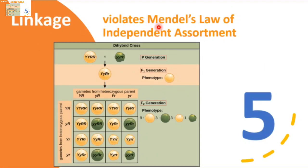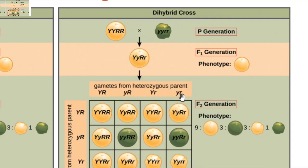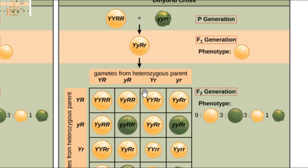And fifth, linkage violates Mendel's law of independent assortment. Recall that when genes follow independent assortment, their alleles sort into gametes independently of one another. In other words, the allele a gamete receives for one gene does not influence the allele received for another gene. Because what happens when there is linkage, especially when it is complete and closed, is that either both dominant alleles and both recessive alleles will be inherited together, or the dominant and recessive alleles will be inherited together. So depending on the type of linkage, which I will be discussing in another video, either these two alleles will go together, or these two alleles will go together.